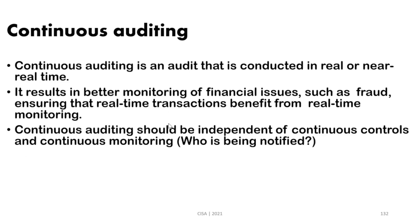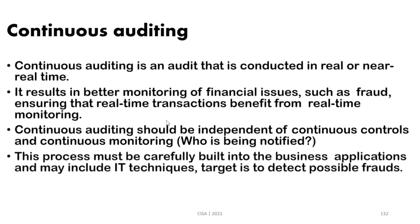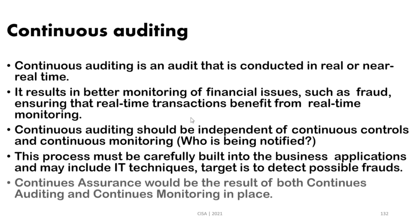The process of continuous auditing should be considered when building a system, because it relies on modules and code integrated from the beginning inside the application. This needs to be considered from the early stages of developing an application. When both continuous monitoring and continuous auditing are in place, you achieve continuous assurance — which is a result of both functions operating together.